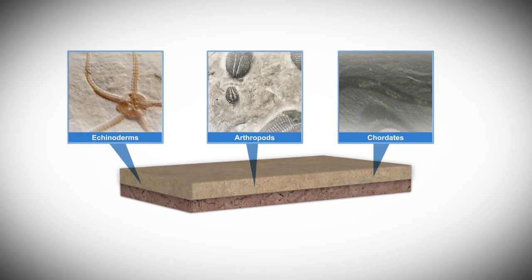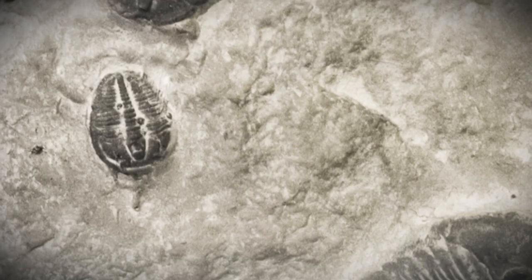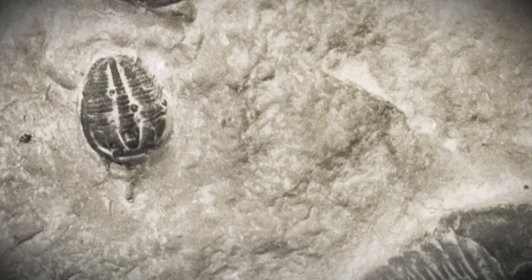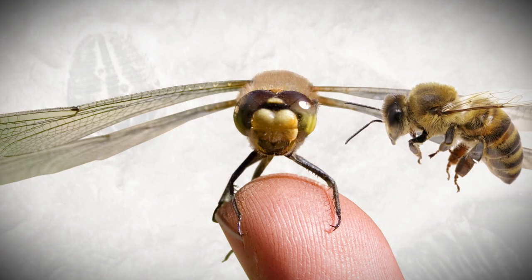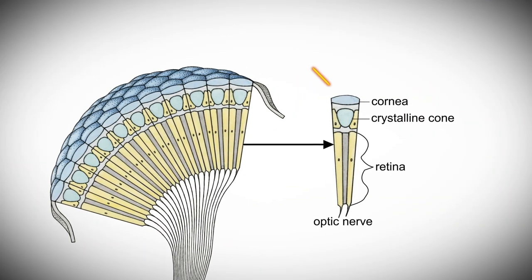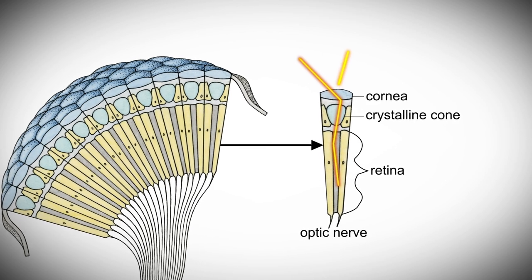And each fossil exhibits amazing complexity. For example, Cambrian arthropods had advanced compound eyes like we see today in dragonflies and bees. The eyes were tuned to the way light travels through water, allowing the creature to see straight.